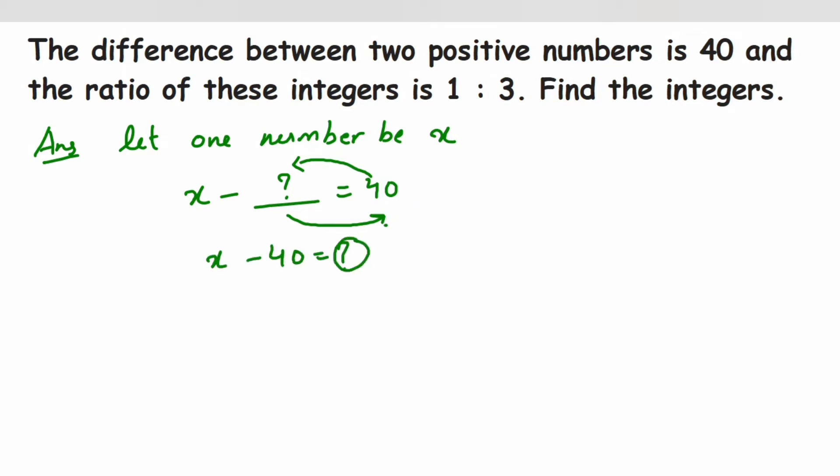So this is nothing but the other number. I have just showed you how we're getting x minus 40. From here we can write down the other number will be equal to x minus 40.